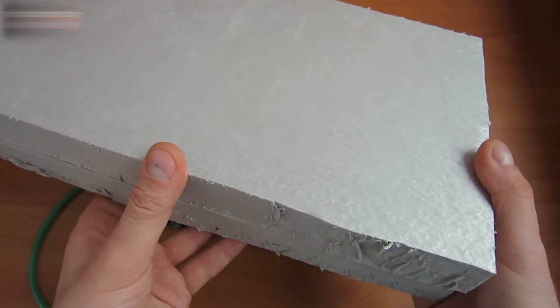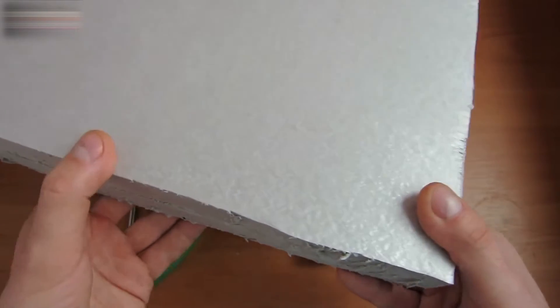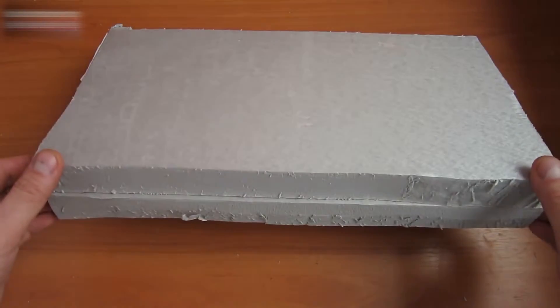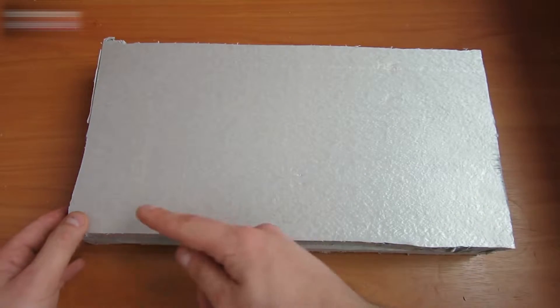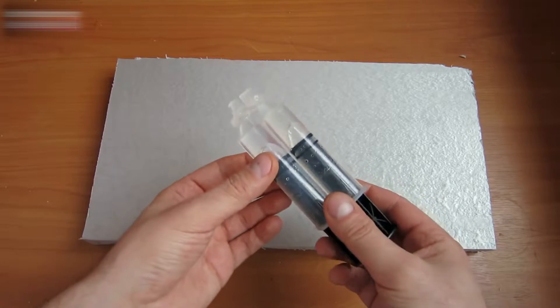Use extruded polystyrene for the boat's hull. You can buy it in a hardware store. It's usually used for wall insulation. Let's make the hull. Glue two polystyrene pieces, 14 inches by 7 inches, together. I'll use two-component glue for this.